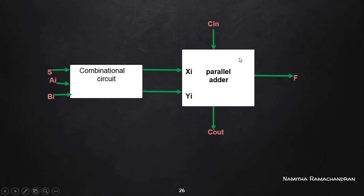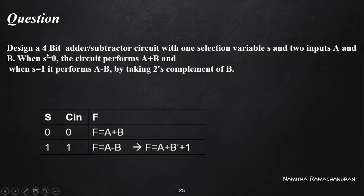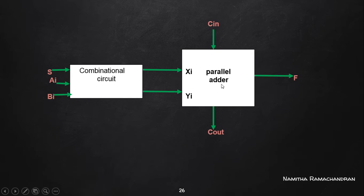Each full adder deals with a single bit of the A input and B input. Xi and Yi indicate the input of each full adder present in this parallel adder. In the given question, we need to implement a 4-bit adder-subtractor circuit, so we need 4 full adder circuits. For the first full adder the inputs are X0, Y0; for the second, X1, Y1; then X2, Y2; and for the last, X3 and Y3. These 4 full adders together generate the output of the parallel adder.